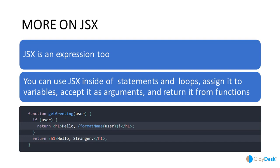You can embed expressions in JSX by wrapping them in curly braces. You can put any valid JavaScript expression inside curly braces in JSX — like 2+2, user.firstName, or a function call. JSX is also an expression itself — after compilation, JSX becomes regular JavaScript function calls. You can use JSX inside if statements, for loops, assign it to variables, accept it as arguments, and return it from functions. JSX also prevents injection attacks.